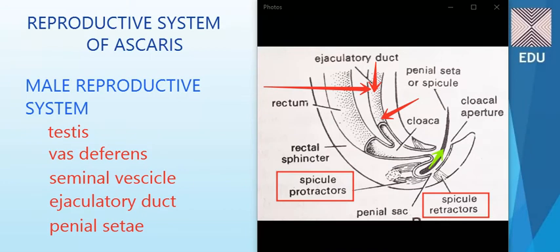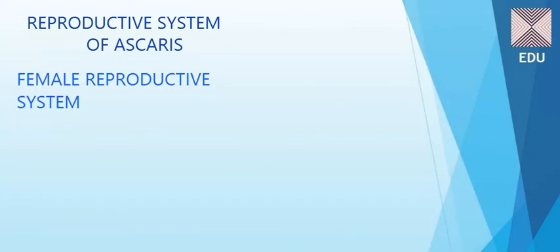Now we head towards the female reproductive system of Ascaris. This system is comprised of simple structures: first the ovaries — two ovaries, not one — then the oviducts, two uteri, and the vaginal tube. These four components make up the female reproductive system.